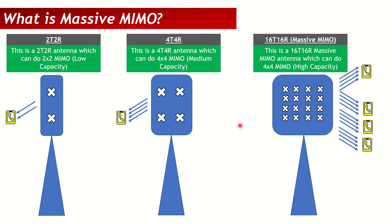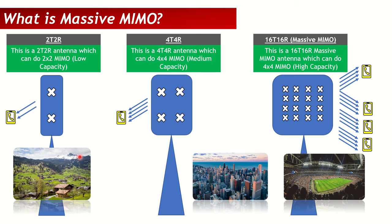Where should you use 2T2R versus massive MIMO? In suburban or rural areas that are not densely populated, 2T2R is suitable. For cities, 4T4R works well. For cities with very high-rise buildings like skyscrapers, or hotspots like stadiums where lots of traffic is generated, you use massive MIMO. That's a simple overview of what massive MIMO is by definition and where we use it.